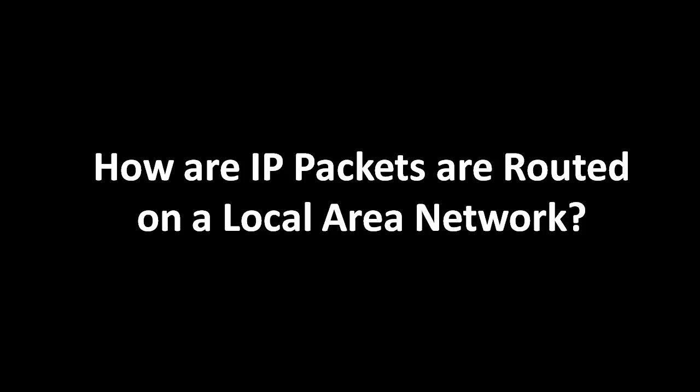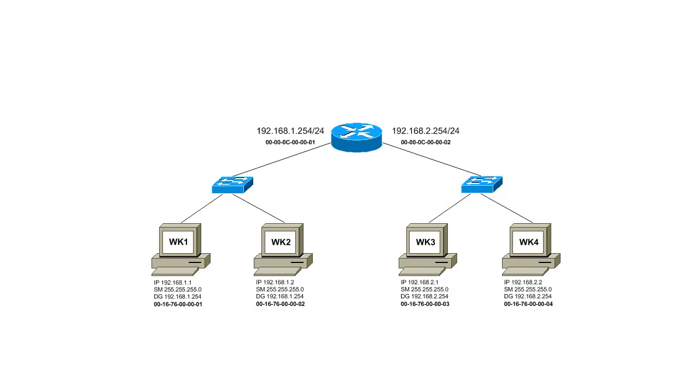Hello, today we're going to look at how IP packets are routed on a local area network. For this topic we're going to use a simple network diagram which depicts two subnets connected by a single router.